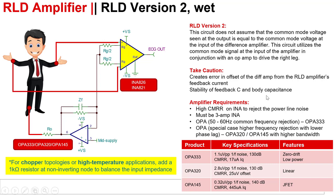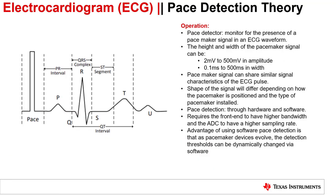A pace detector is designed to monitor for the presence of a pacemaker signal in an ECG waveform, helping doctors decide how to treat patients. Pacemaker signals appear as high frequency pulses right before the ECG waveform. Their amplitude can range from 2 millivolts to over 500 millivolts, and their width from 0.1 milliseconds to 500 milliseconds. One advantage of software pace detection is that as pacemaker devices evolve, the detection thresholds can be changed via software instead of modifying system hardware.